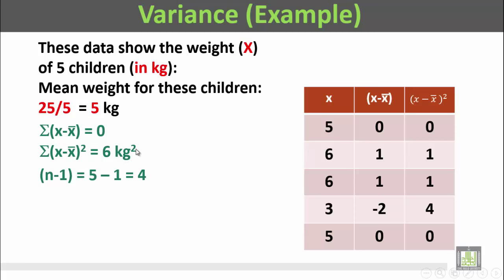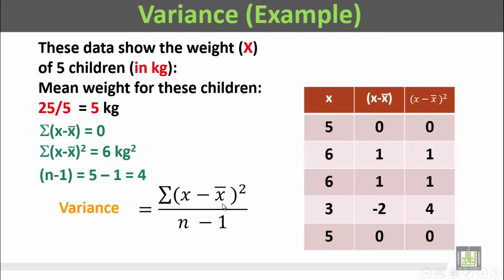n minus 1: since n is 5 (the number of children), n minus 1 equals 4. So the variance is equal to Σ(x minus x̄) squared divided by n minus 1, that's 6 divided by 4, which equals 1.5 kilograms squared.